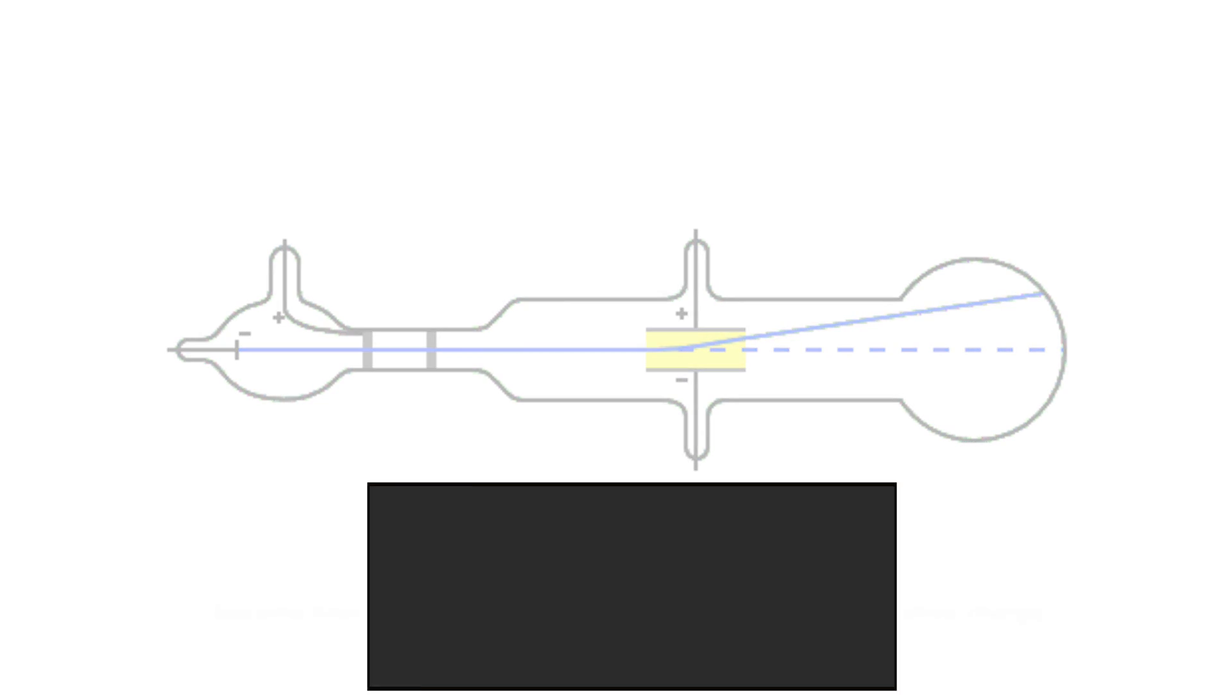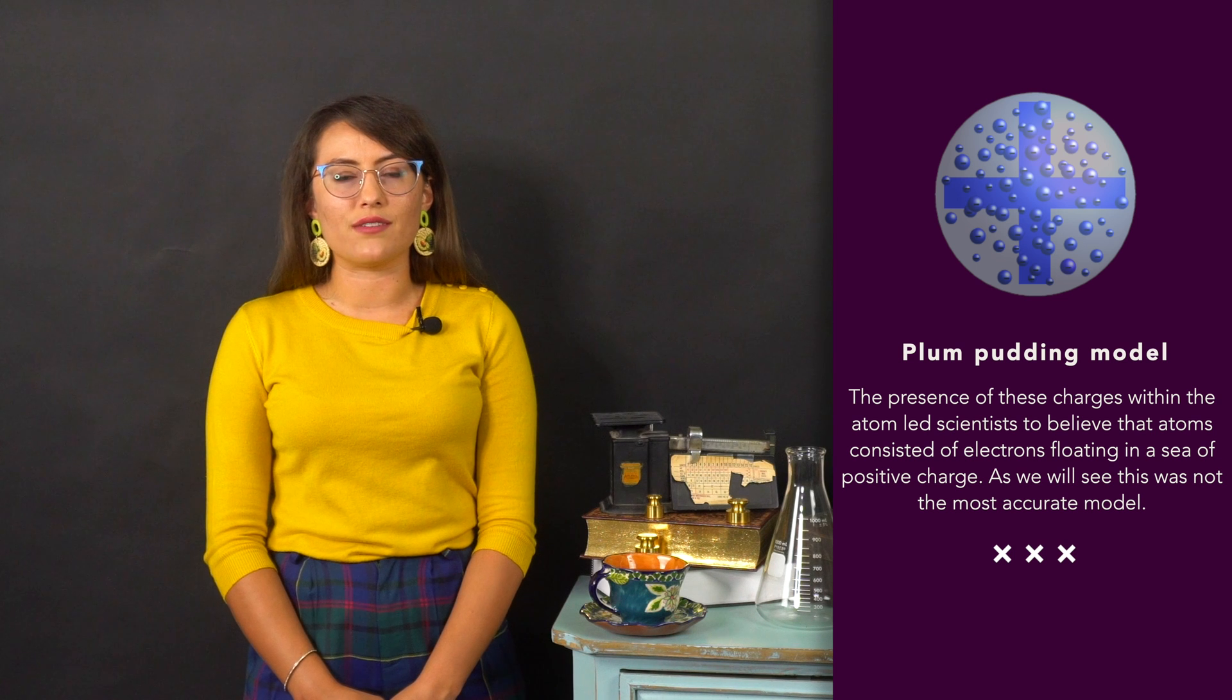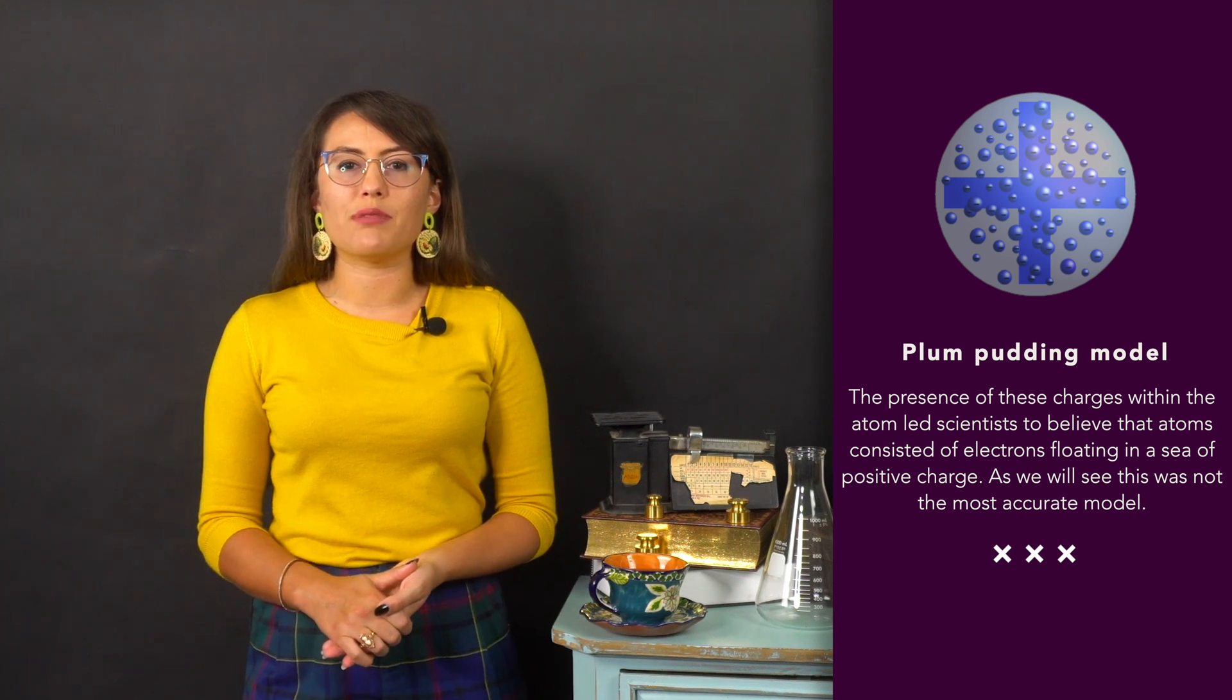The presence of these charges within the atom led scientists to believe that atoms consisted of electrons floating in a sea of positive charge. This model was developed by J.J. Thomson and was referred to as the Plum Pudding Model.